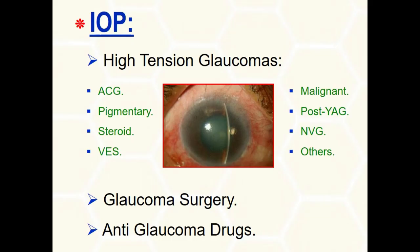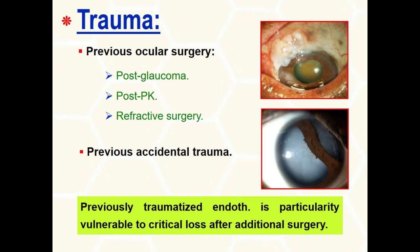Glaucoma-induced endotheliopathy occurs with all types of glaucoma. This damage is more pronounced with high-tension glaucomas such as angle-closure glaucoma, pigmentary, neovascular, steroid-induced, and viscoelastic-induced glaucomas. All filtering glaucoma operations and goniosurgery significantly compromise the corneal endothelium.